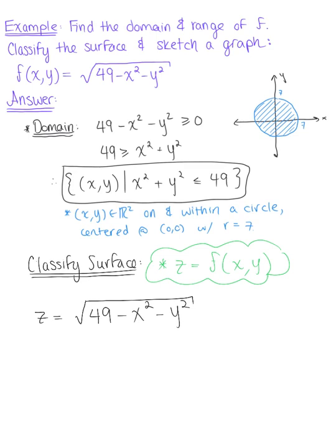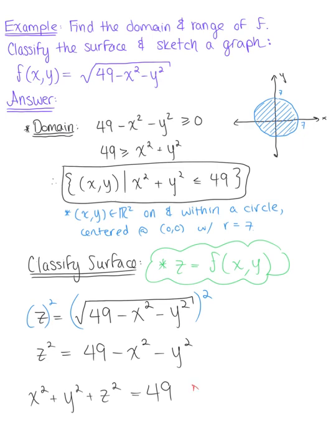So we can square both sides of the equation, which leaves us with z² equals 49 minus x² minus y². And bringing all the variables to one side, we're left with x² plus y² plus z² equals 49. And so we recognize this surface here as a sphere centered at the origin with a radius of 7.